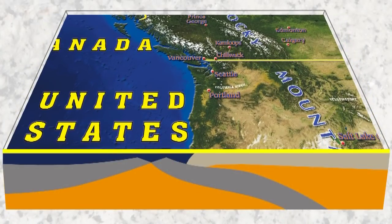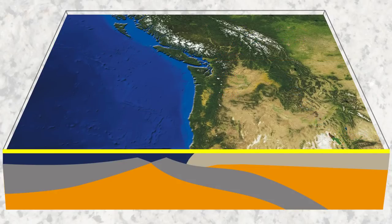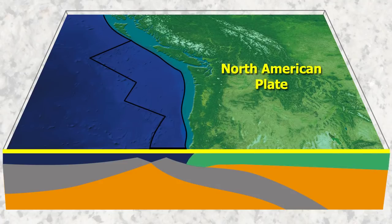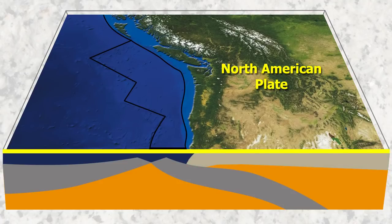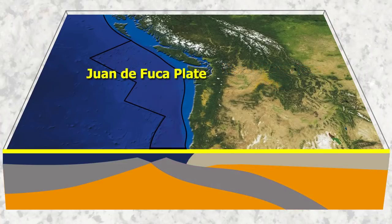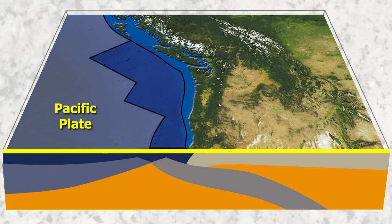Let's start by looking at the pieces we're going to be examining in this example. First up is the Earth's crust, which is made up of the Earth's tectonic plates. We will be looking at three plates in this example: the North American plate, the Juan de Fuca plate, and the Pacific plate.